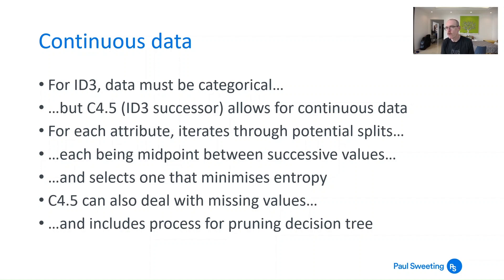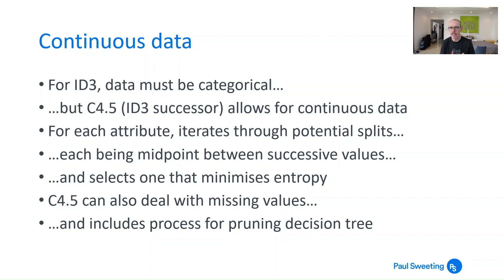Because what you're always trying to do here is minimize entropy — come up with something which gives you the greatest information gain, the greatest improvement in decision-making capabilities. C4.5 is also useful in that it can deal with missing values and it also includes a process for pruning the decision tree. We won't go into that here — we'll just look at the continuous approach. But it is a more useful, more developed approach than ID3 was.